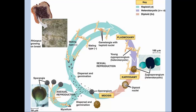In the asexual stage, these hyphae can just grow sporangia which produce haploid spores, and this cycle can kind of go around by itself.